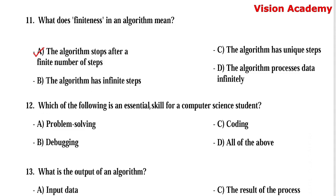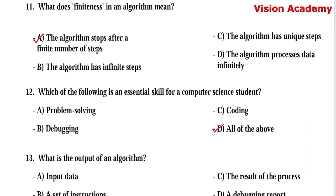Question number 12: Which of the following is an essential skill for a computer science student? Option A, problem solving. Option B, debugging. Option C, coding. Option D, all of the above. Here, option D, all of the above, is the right answer.